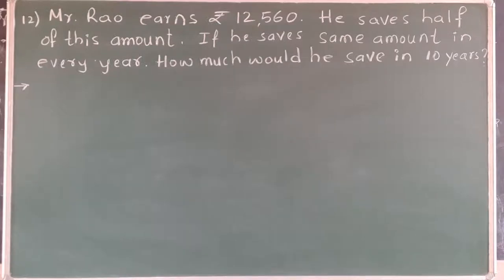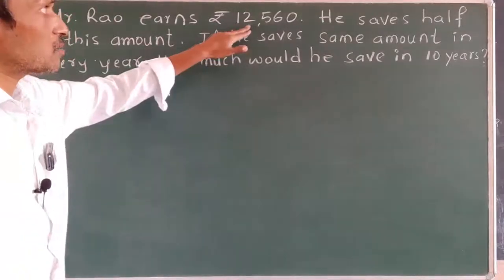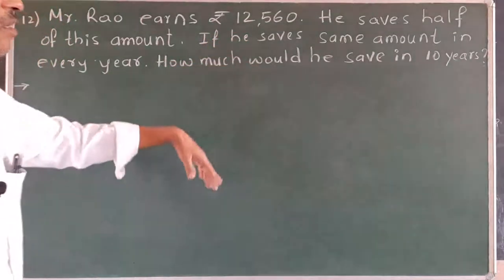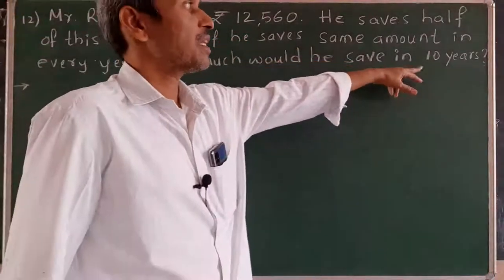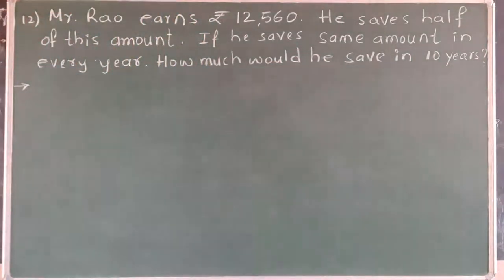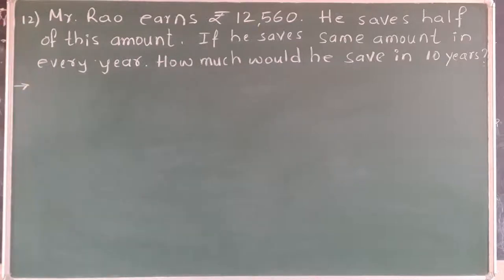We should calculate how much he saves in one month. Then we should find how many months are there in 10 years. That is, 1 year is 12 months, so 10 into 12 is 120 months. We should find the savings of one month, then multiply by 120 months, and then we will get the total savings in 10 years.